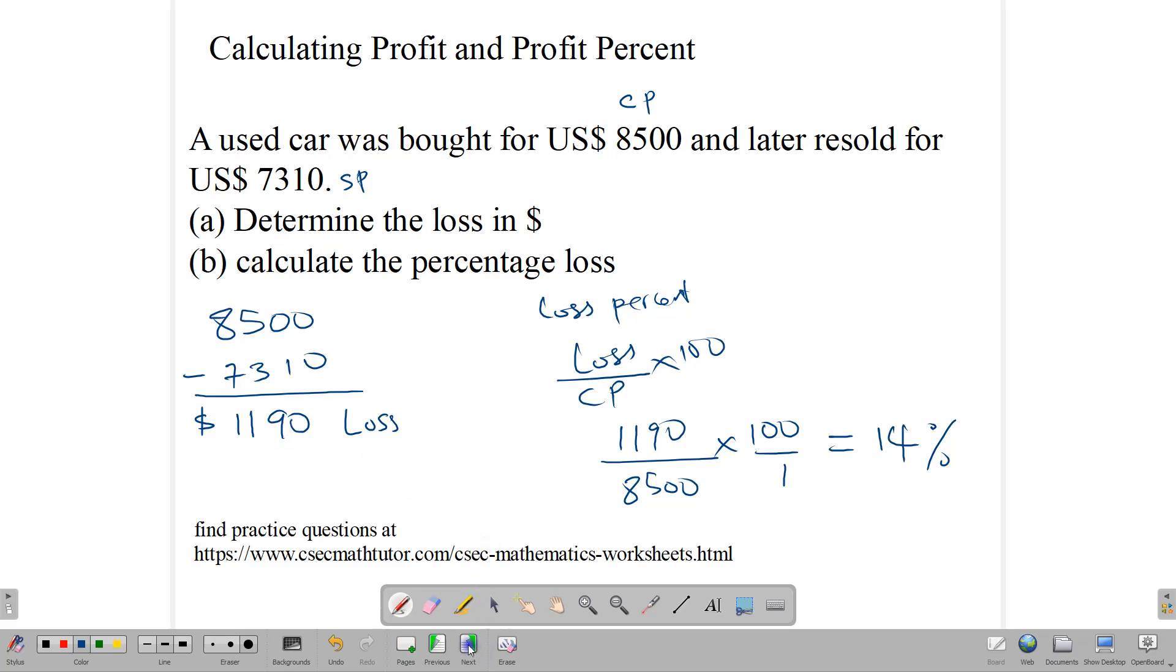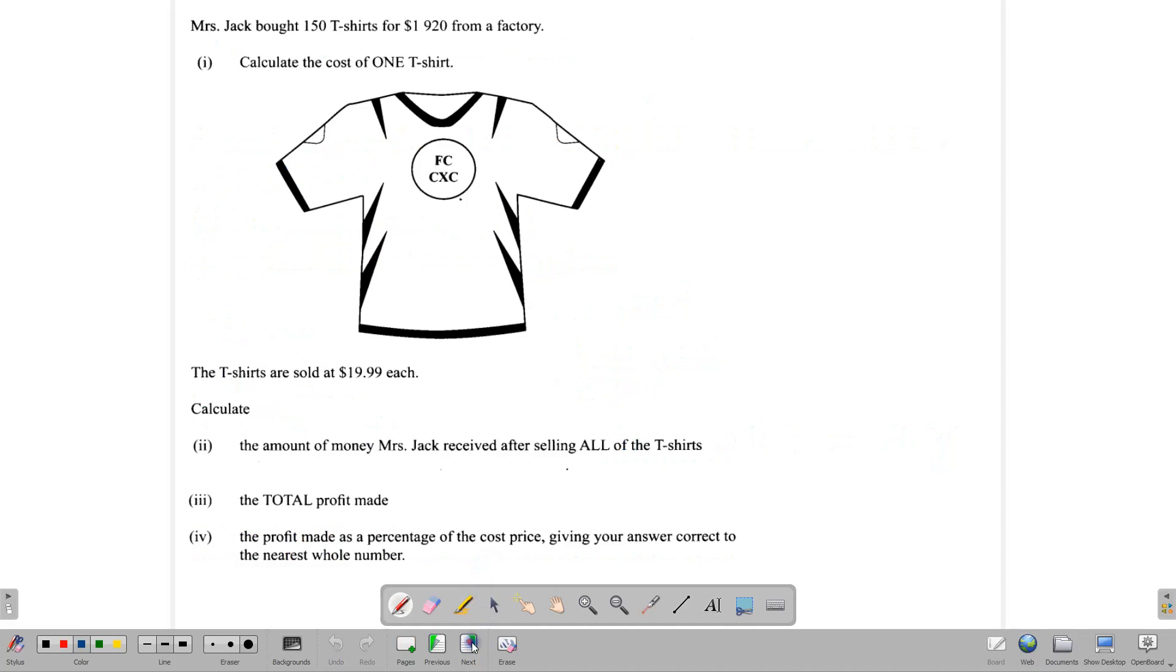Let's continue by looking at some questions from CXC that includes these kinds of ideas. Here we have a question. Mrs. Jack bought 150 t-shirts for $1,920.